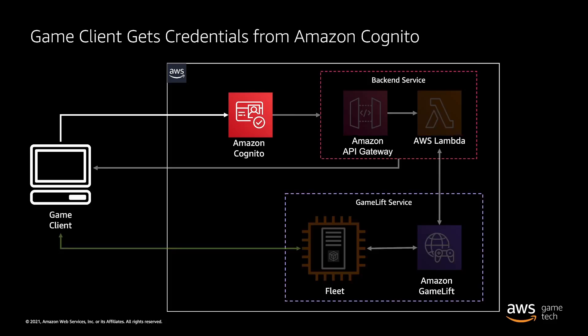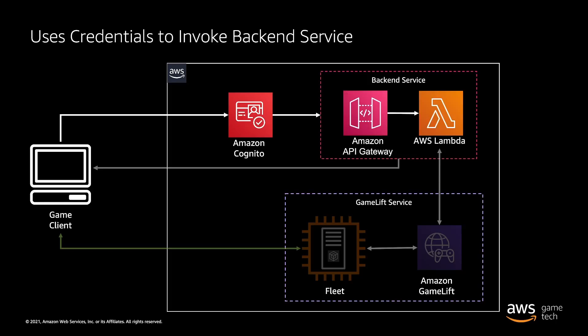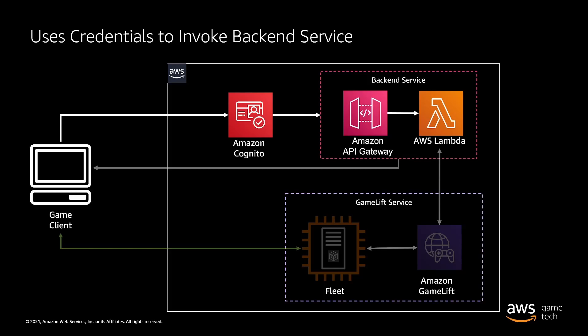Just to recap what this final architecture flow will look like: a user will register or log in to get their temporary credentials. They'll then be able to make a call to API Gateway to join a game. API Gateway will trigger a Lambda function where any of our matchmaking logic will happen, and that will then call the Amazon GameLift service.